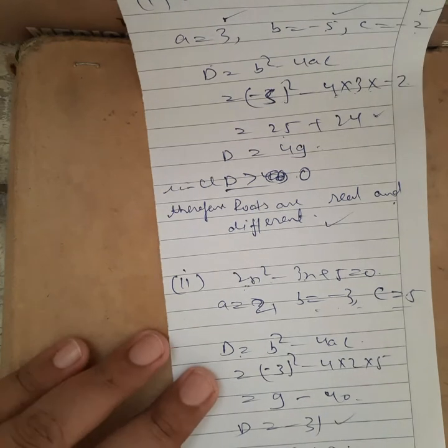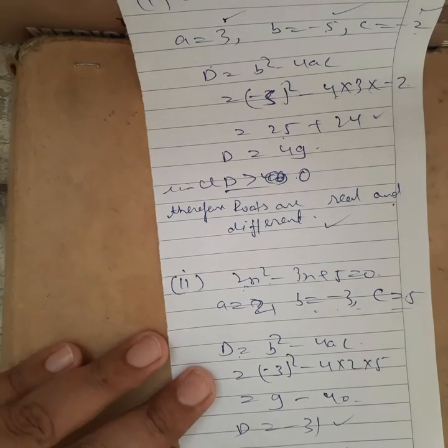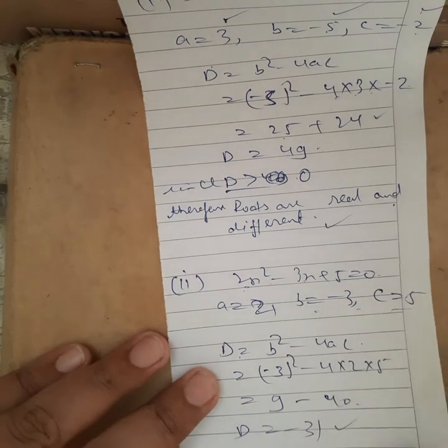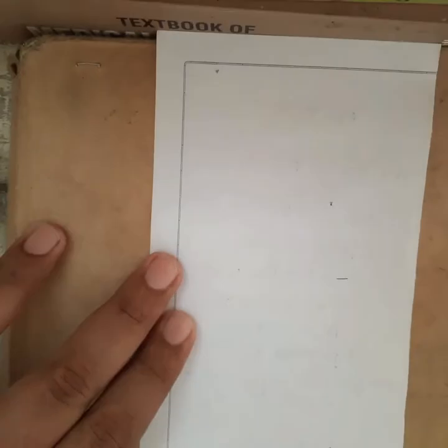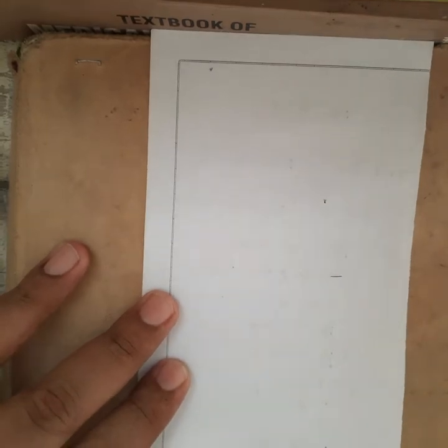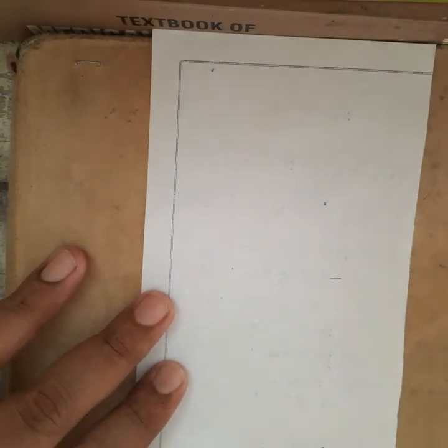Again we calculate and we get D = -31. Since D is less than 0, therefore the roots are imaginary. Now question number two of exercise 5.4 is the same. As for question number three, you have to find the nature of the roots, and then if they exist, you have to find out the roots also. So I think you people will be able to solve these questions. If you are finding it difficult, you can ask me through message.